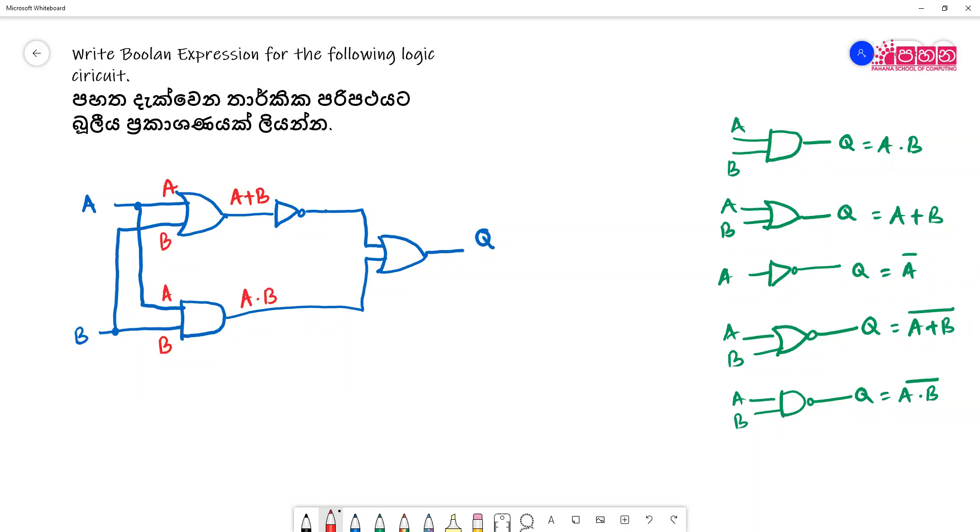If there are NOT gate, we are getting A plus B and an output given, what is the output?